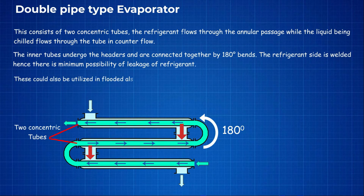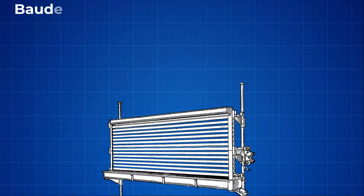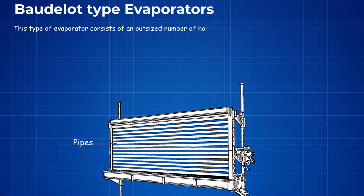These could also be utilized in flooded as well as dry mode. This type needs more room than other designs, but shorter tubes and counterflow give a good heat transfer coefficient. Baudelot type evaporators consist of a large number of horizontal pipes stacked one on top of the other.